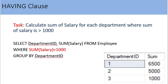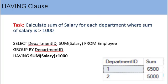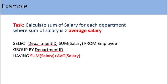We need to apply the condition only after the aggregates are computed — the solution is the HAVING clause. Now look at the query: the condition SUM(salary) > 1000 is provided in the HAVING clause and it works fine. Only records with sum of salary greater than 1000 appear in the output. Look at another example: calculate sum of salary for each department where sum of salary is greater than average salary. The HAVING clause condition is: HAVING SUM(salary) > AVG(salary).